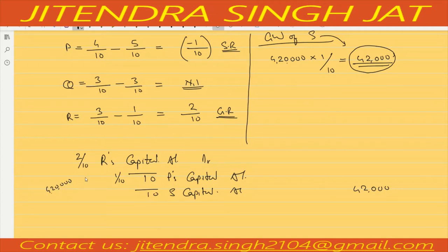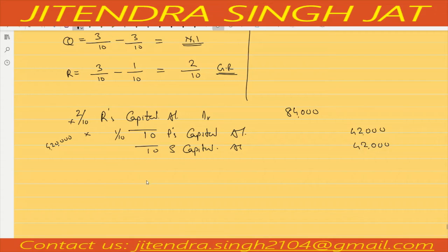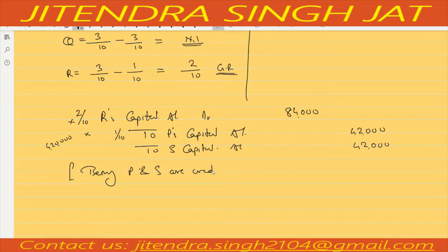So 4,20,000 multiplied by 2/10, because R is gaining 2/10, gives 84,000. The gaining partner is debited and the sacrificing partner is credited to adjust the goodwill of S. Being P and S are credited.